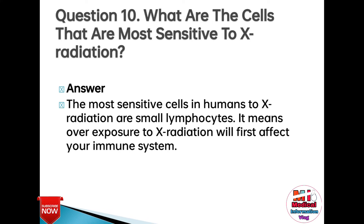Question 10: What are the cells that are most sensitive to X-radiation? Answer: The most sensitive cells in humans to X-radiation are small lymphocytes. This means overexposure to X-radiation will first affect your immune system.